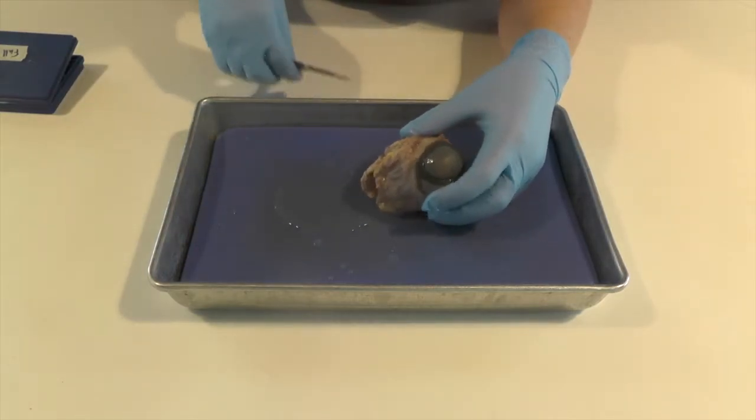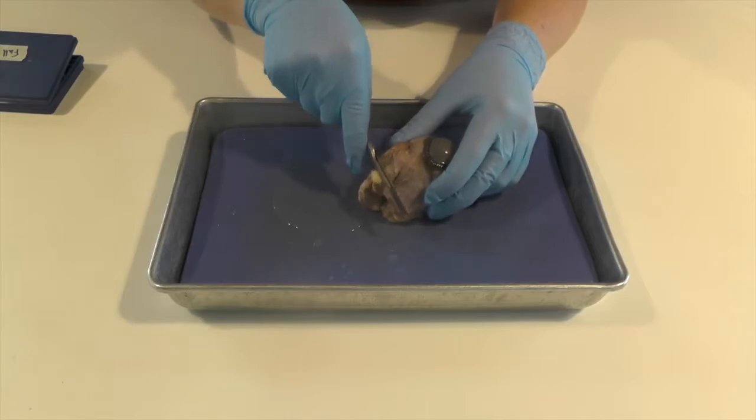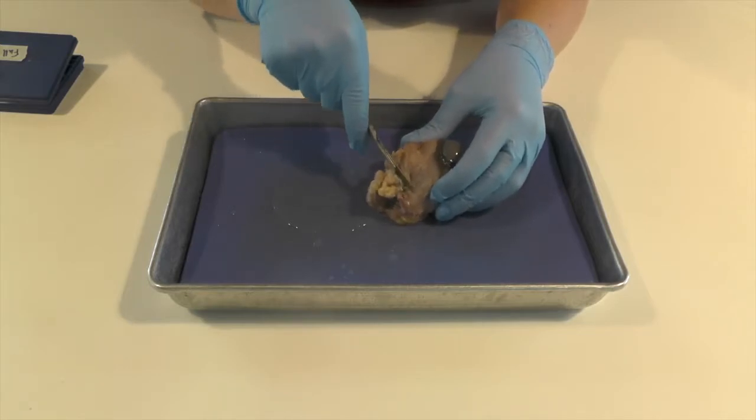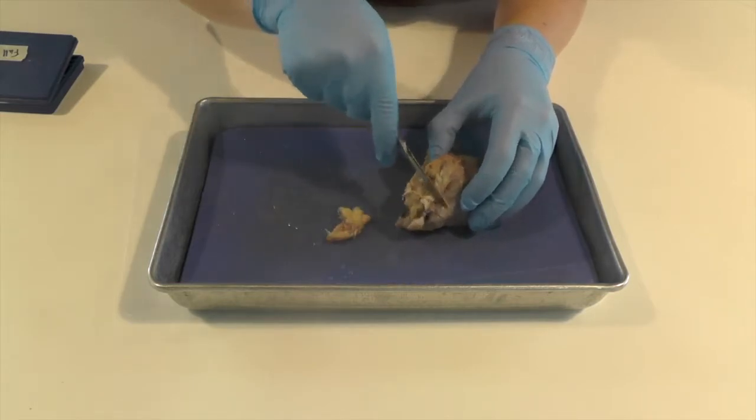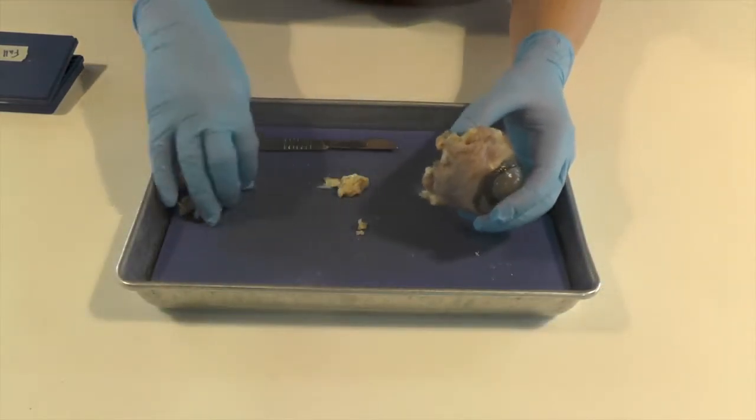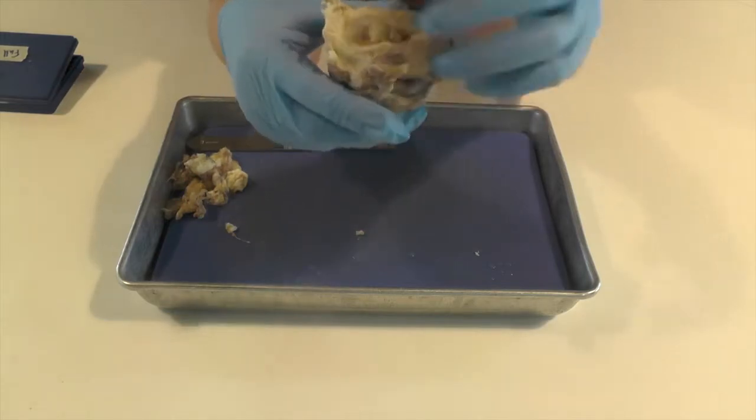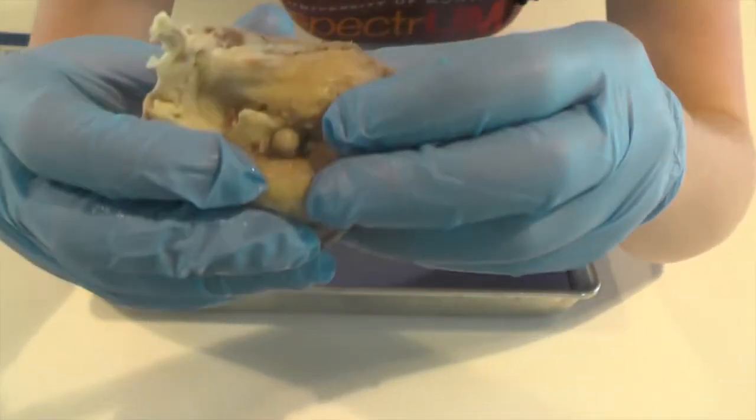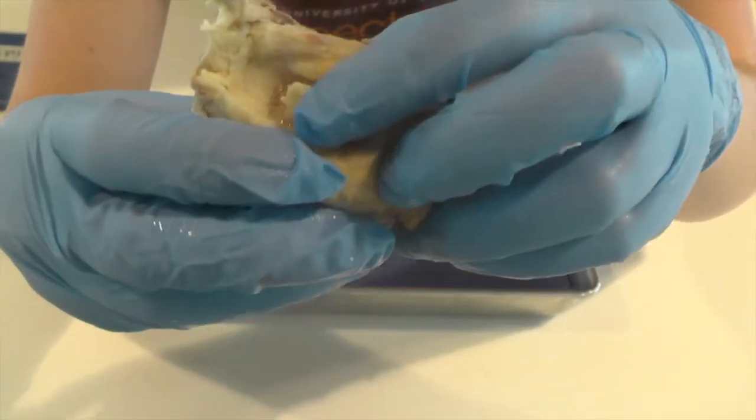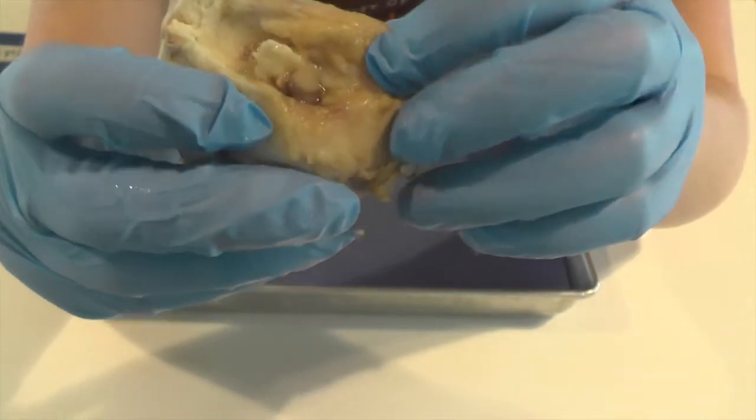So before we see inside our eye, I'm just going to cut out this extra muscle here and fat. Okay so we've got a little extra muscle and fat out of the way here. So you can see the back of the eyeball now. And right back here there's this little nub that you'll notice and that's our optic nerve.